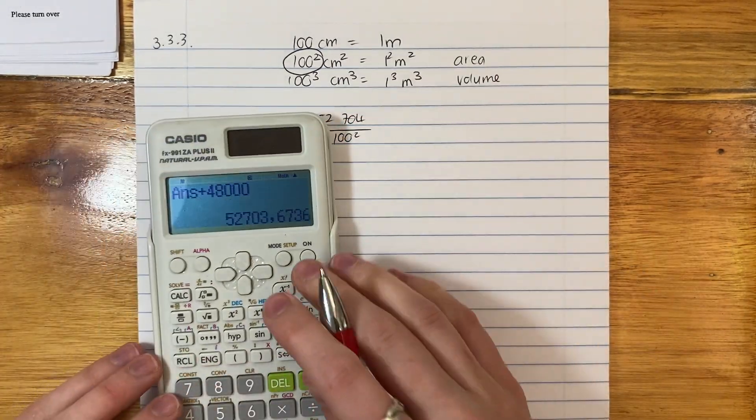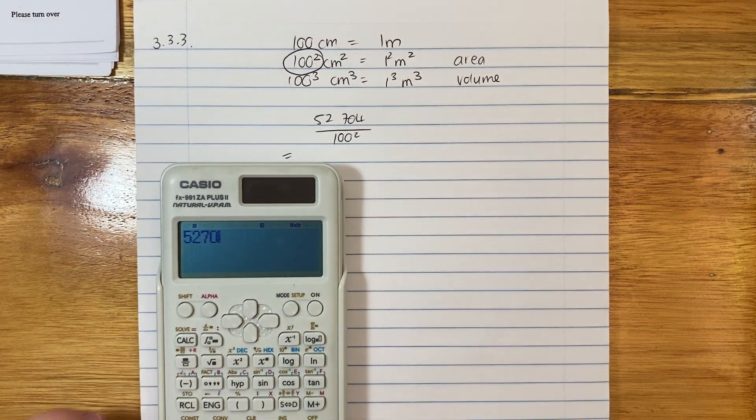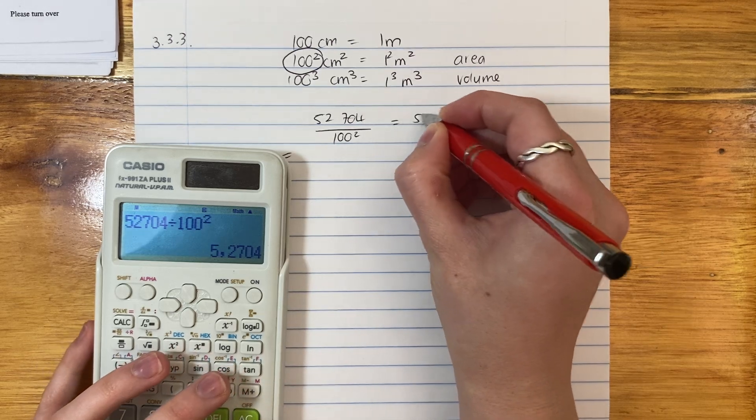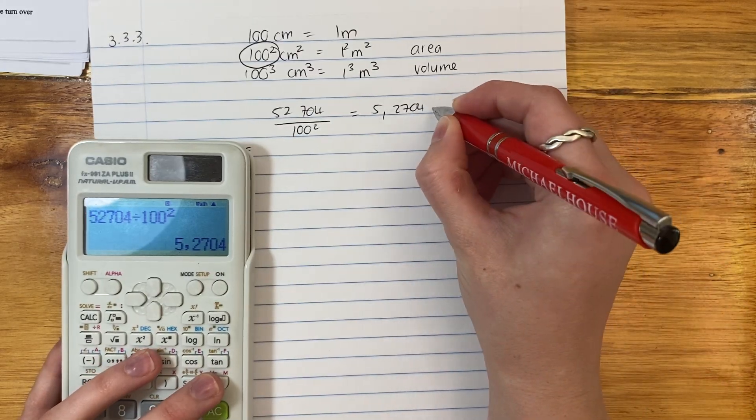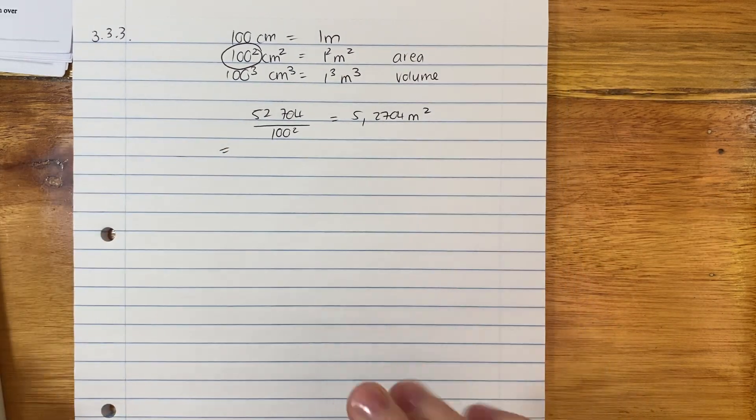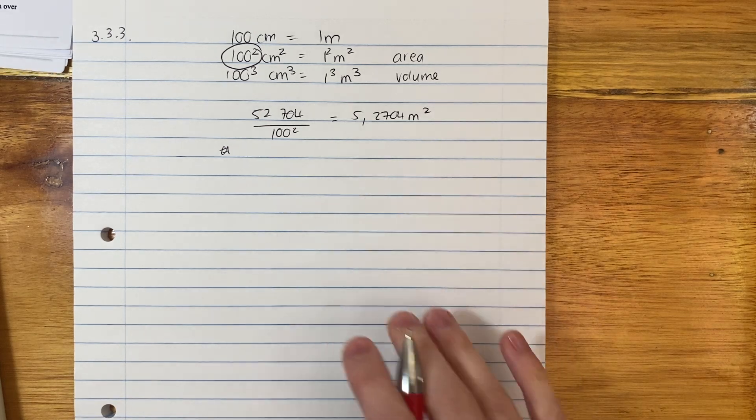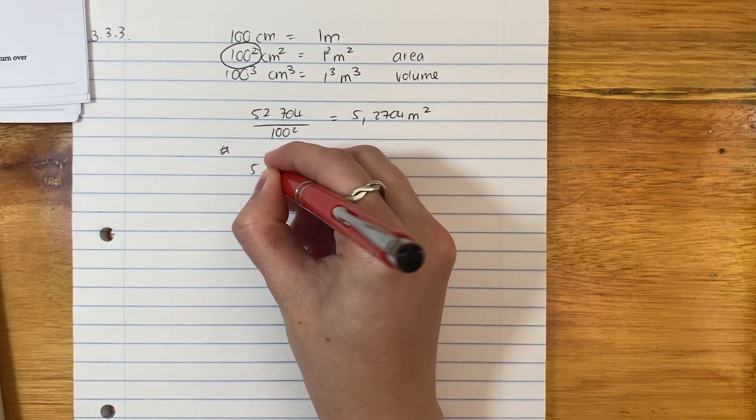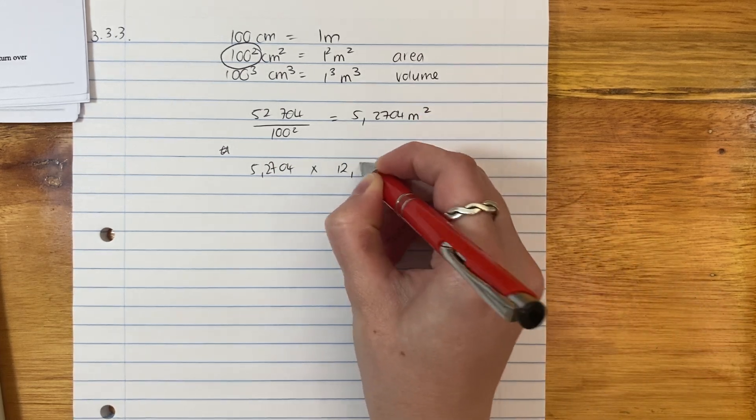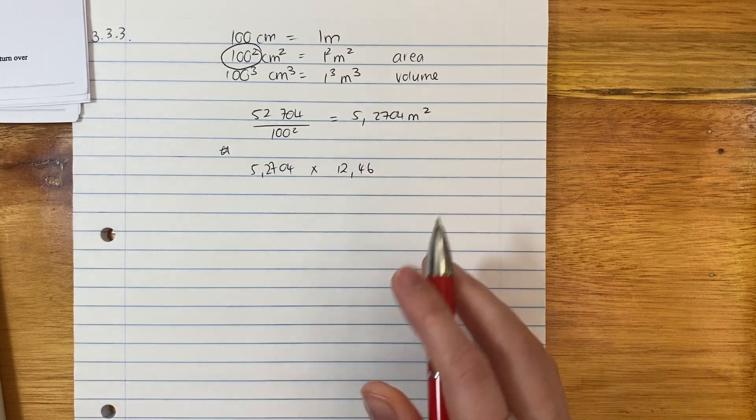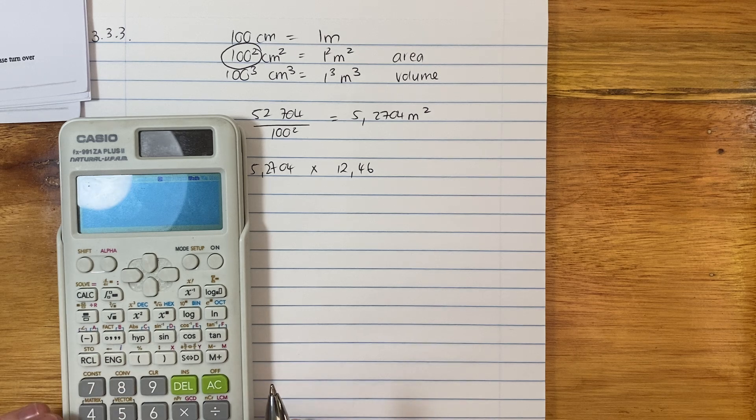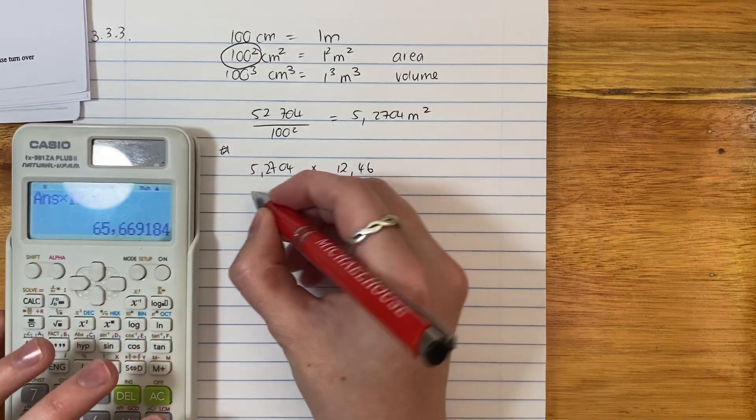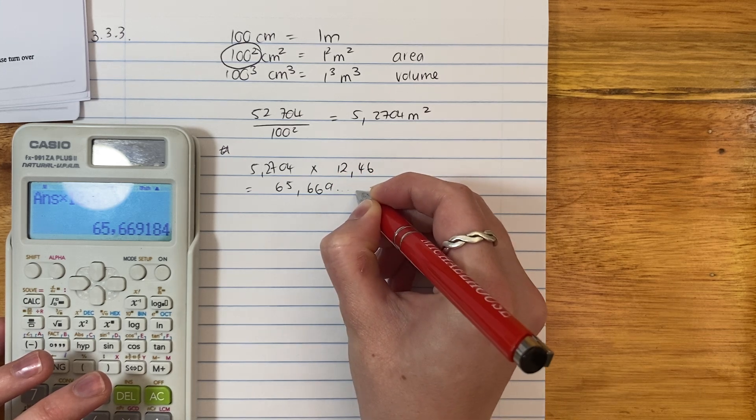You put that in. So we're going to say 52704, we're now working with our rounded because that's what they asked us to do, divided by a hundred squared. And it says that this is this many meters squared. That's how many meters squared it is. For each meter squared, we need 12.46. Wonderful. No problem. We just say 5.2704 times it by 12.46. We say all these meters squared that we have, we have to times it by the liters that we need. We times it by this and it gives us 65.669 liters.